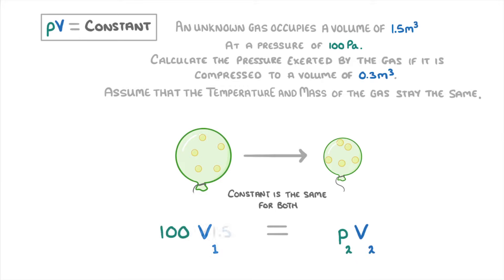So 100 times 1.5 equals something times 0.3, which we can rearrange to get 500 Pa, just like we got before.